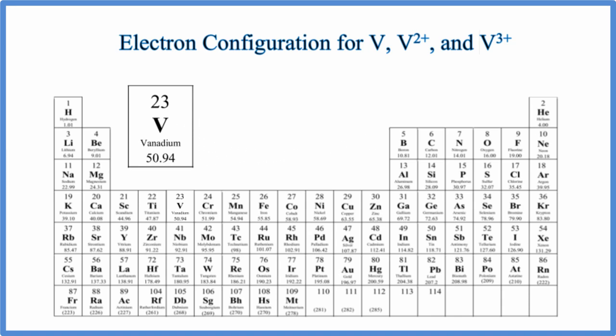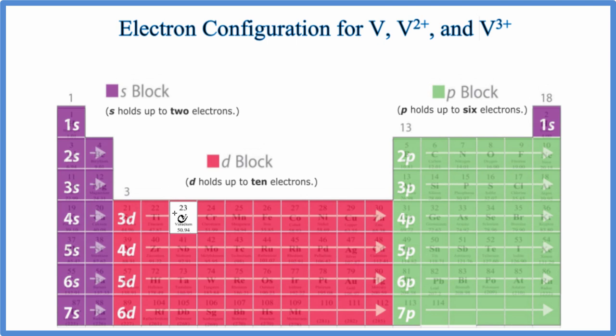Here's vanadium with 23 electrons. We're going to look at these orbital blocks. We have 1s, and 1s can only hold up to 2, so it's full with 2. We follow the atomic numbers: 2s1, 2s2. We're trying to get to 23. We get to 2p, and p holds up to 6.